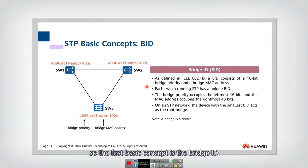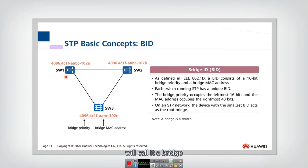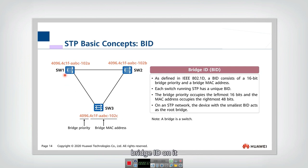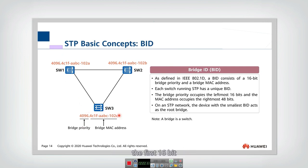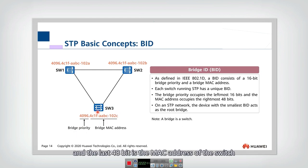The first basic concept is the Bridge ID, or BID. Every switch — we call it a bridge — has a Bridge ID assigned to it. Each Bridge ID is composed of two parts: the first 16 bits are called the bridge priority, and the last 48 bits are the MAC address of the switch.